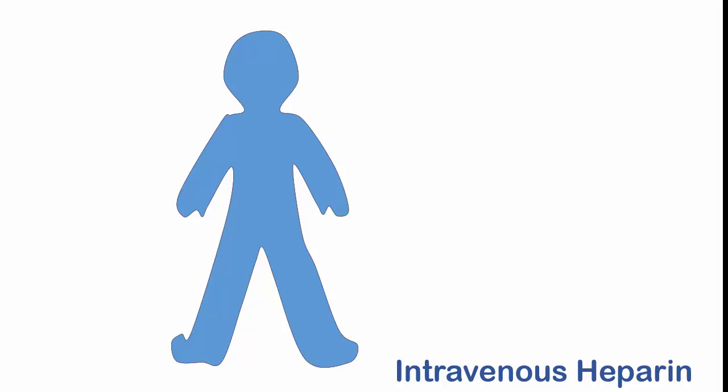The purpose of this video is to explain what's happening in the body with intravenous heparin. Heparin is a powerful anticoagulant, which means that it stops the blood from clotting. It can aid in blood flow and can be referred to as a blood thinner.